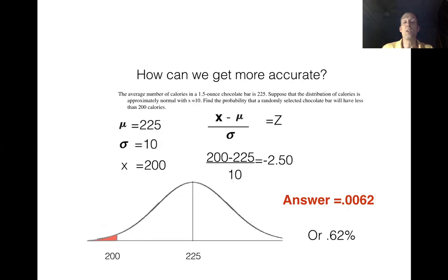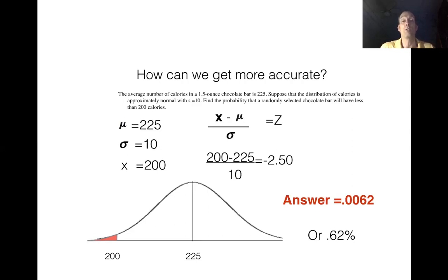So the answer is 0.0062, or 0.62%. By the way, if you love chocolate, this means you want to buy that chocolate bar — the probability is less than 1%, so it's basically telling you that a bar under 200 calories is almost impossibly rare. If you found one, you'd probably want to buy the whole case.